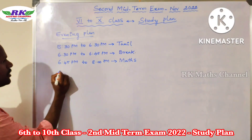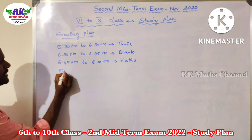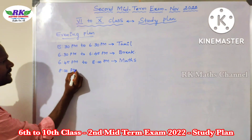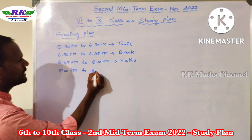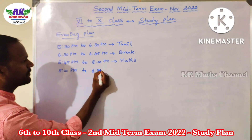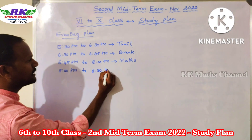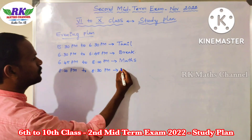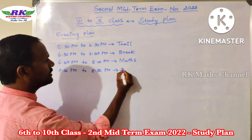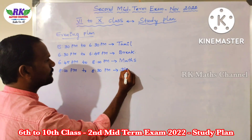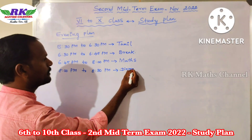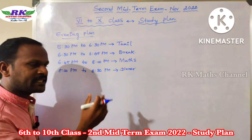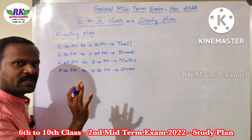Time is 8. What do you do? 8 to 8:30 — you can eat. That means dinner. 8 to 8:30 — dinner. You have half an hour to finish dinner.